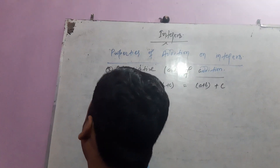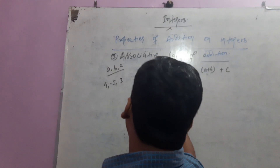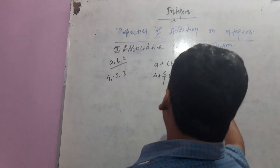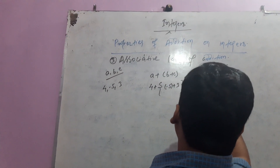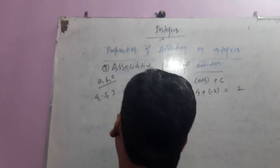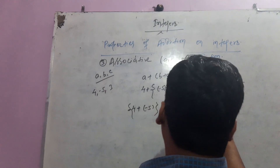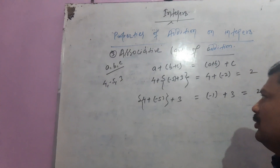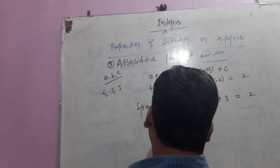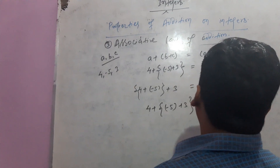For example, take three integers: 4, minus 5, and 3. If we add 4 with the sum of (minus 5 + 3), the result is 2. And if we add 3 with the sum of (4 + minus 5), the result is again 2. So according to this law, swapping the grouping of integers does not change the sum.